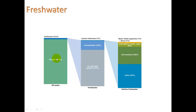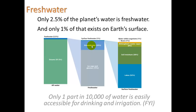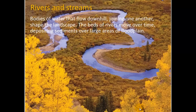Of all the water on Earth, 97.5% is in the ocean, leaving only 2.5% as fresh water. Of that, only 1% exists on the surface — the thin amount of dark blue you see here. This is what we use: surface water and groundwater. Only 1 part in 10,000 of water is easily accessible for drinking and irrigation. It's a very valuable resource — that's the message.